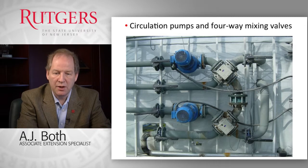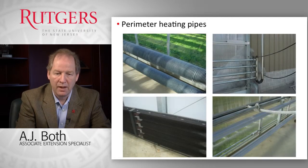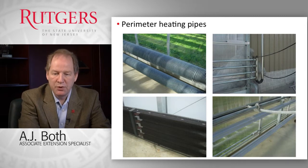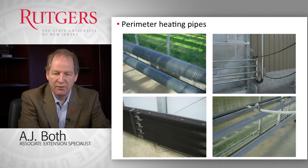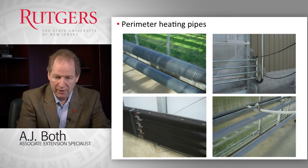Here you see an installation with four-way mixing valves and, shown in blue, the circulation pumps used for each zone to pump water around when needed. There are different designs for the heating pipes used with hot water systems — they can be smooth or equipped with fins in various designs to increase convective heat loss and ensure that energy provided as hot water is quickly and completely released into the greenhouse environment.